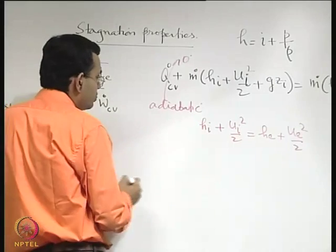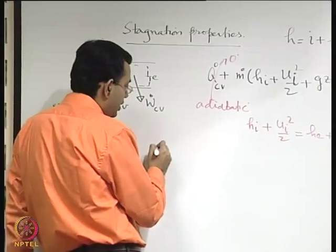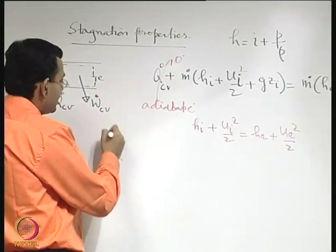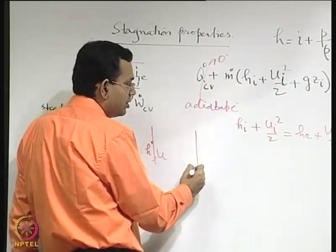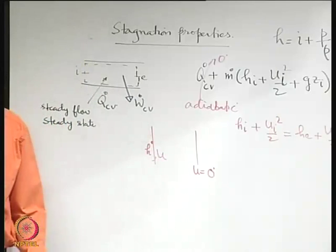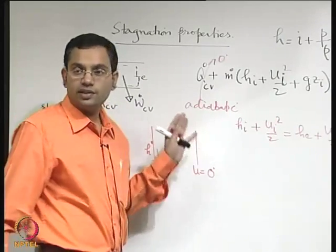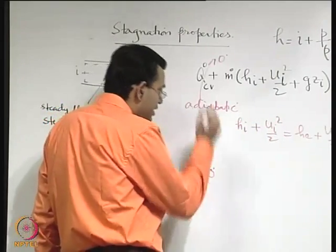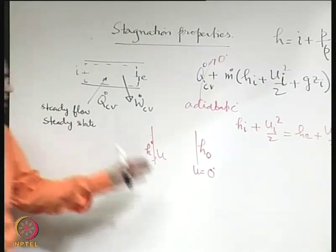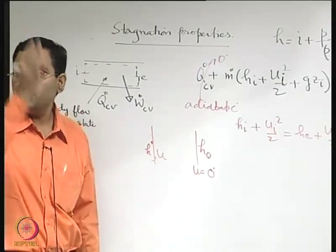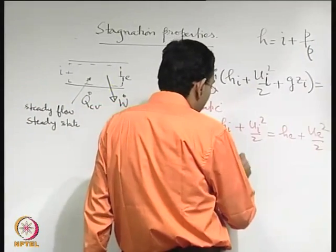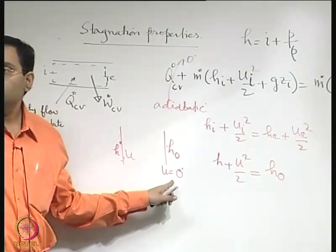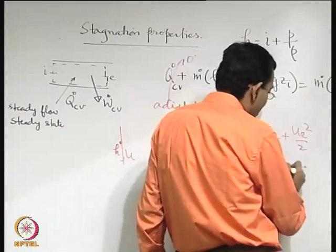Considering two sections: a generic section where the specific enthalpy is h and velocity is u, and a special section where the velocity is brought to zero — a stagnation section. The corresponding enthalpy there is h₀. In a one-dimensional treatment, section and point are equivalent. So we can write: h + u²/2 = h₀, because at stagnation u = 0. This h₀ is known as the stagnation enthalpy.